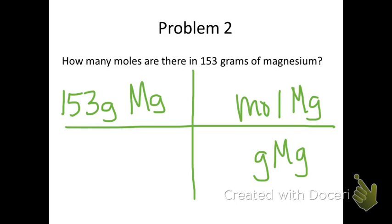Now that you have 153 grams of magnesium in the top left box, grams of magnesium in the bottom right box, and moles of magnesium in the top right box — you need to determine what number should go with grams of magnesium and moles of magnesium. You should have placed 24 from the periodic table on the bottom with grams and 1 on top.